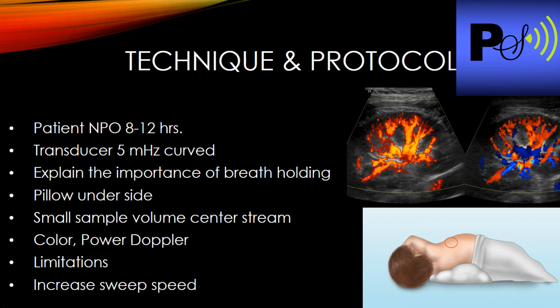When Dopplering the vessels, use a small sample volume — two to three millimeters. Use color Doppler, and for difficult patients consider power Doppler for nice images. Know the limitations — if the patient is very obese or gassy, you may not be able to get adequate images. When doing Doppler, increase the sweep speed so you can get a nice clean waveform to measure.